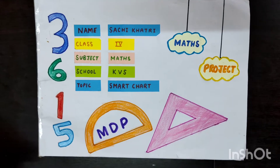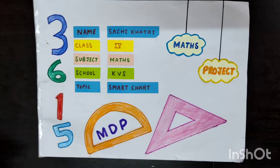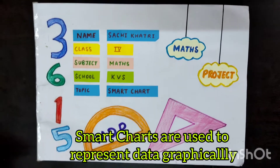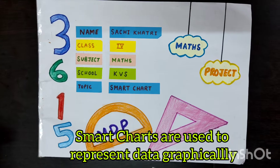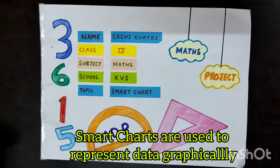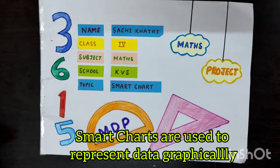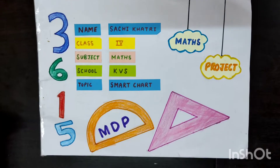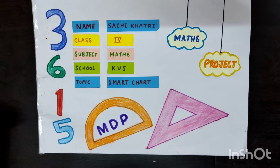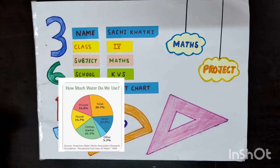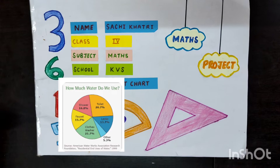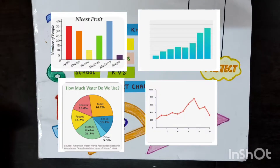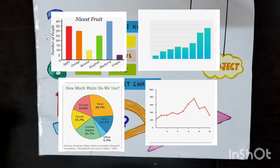Firstly, you have to know what Smart Charts are. Smart Charts are used to represent data graphically, which makes it easier to understand. Examples include: Pie Chart or Chapati Chart, Bar Chart, Column Chart, Line Chart, etc.